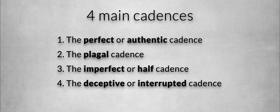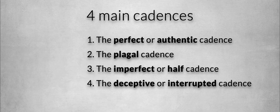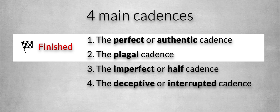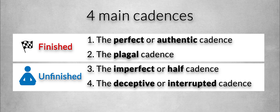The first two cadences — the perfect and the plagal cadence — are finished cadences, because they end on the tonic chord. This makes you feel that it has ended; the phrase is finished. The last two cadences are unfinished cadences that do not end on the tonic. These unfinished cadences leave room for the music to go on while still creating a moment of rest.